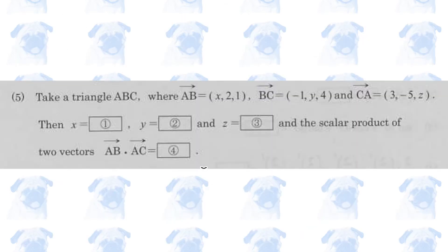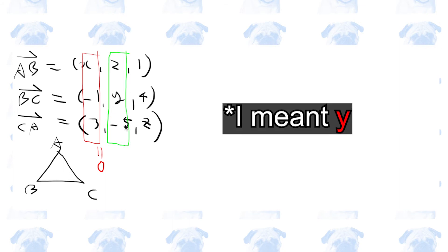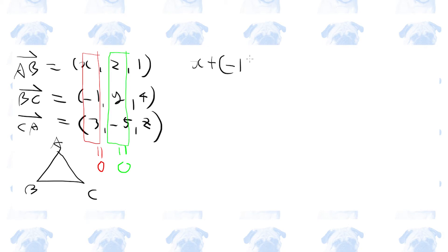Question 5. We have a triangle ABC and 3 vectors with X, Y, and Z components. Vector AB is missing its X component, vector BC is missing its Y component, and vector CA is missing its Z component. Since ABC is a triangle, the sum of all 3 X components must equal 0, and likewise for Y and Z. Therefore X plus minus 1 plus 3 must be 0 — because we go from A to B to C and back to A — so X equals minus 2.